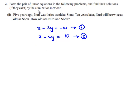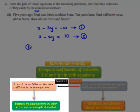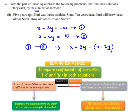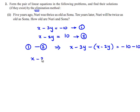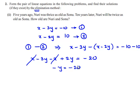We have to find the value of x and y by the elimination method. Equation 1 minus equation 2 gives x minus 3y minus of x minus 2y is equal to minus 10 minus 10. That gives minus 3y plus 2y equal to minus y, which equals minus 20. So we get the value of y as 20.